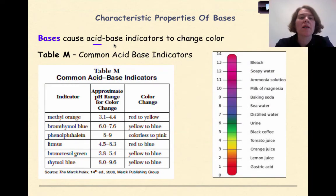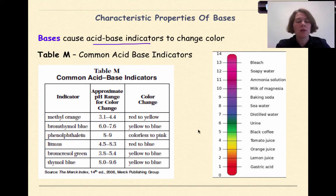Bases will also cause acid-base indicators to change color. So again, when we talk about indicators with acids or bases, we're going to come back to table M, and we're going to be able to see these color changes and be able to classify a compound potentially using this chart right here, using these two charts.